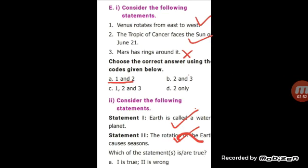Next, consider the following statements. First one: Venus rotates from east to west. This statement is true. Next, the Tropic of Cancer faces the sun on June 21st. This statement also true. Next, Mars has rings around it. It is false. The best answer is option A.